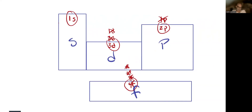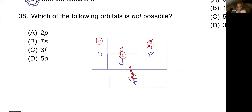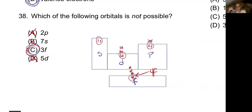Looking at the answer choices: 2P is possible — it's the first P. 7S is possible — S blocks can go any number. 3F is not possible — the first F block is the 4F, so 3F is the answer. 5D is fine since the first D starts at 3D. The answer is 3F.